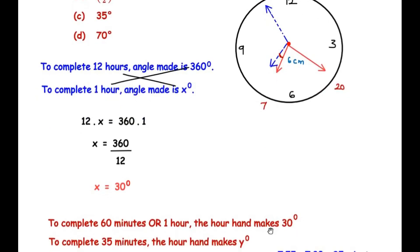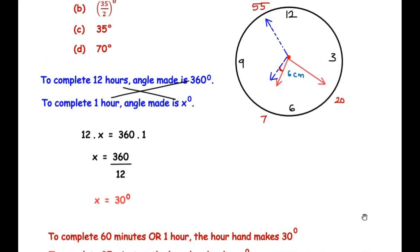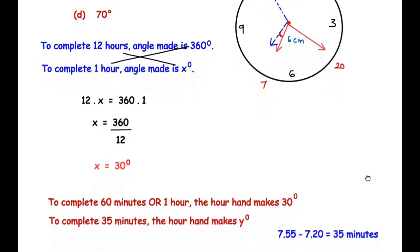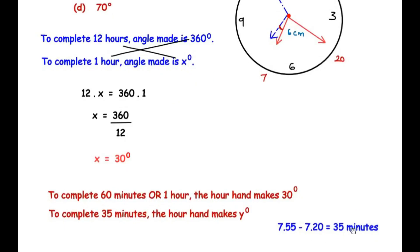If we consider 35 minutes, that is from 7:20 minutes to 7:55 minutes, if we subtract the time, here we have shown 7:55 minus 7:20, that gives us 35 minutes. Then for 35 minutes, what will be the angle made by the hour hand? So here we have taken it as y degrees.